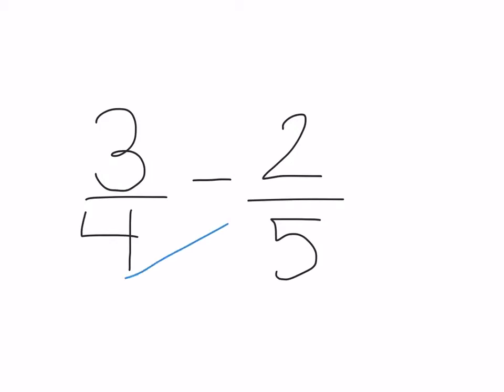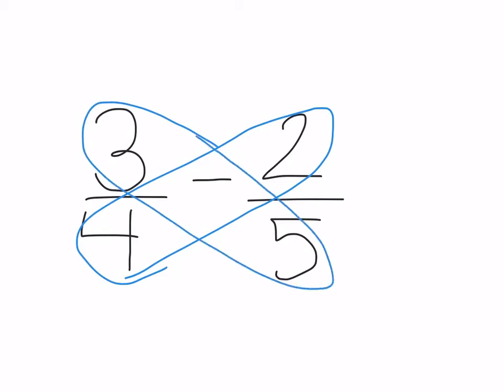You would do a similar method if you wanted to subtract numbers. So if you wanted to subtract 2 fifths from 3 fourths, you would first create the butterfly body by multiplying the two sides. And then you would create the antennas, and write the two numbers inside, so 3 times 5 again is 15, and 4 times 2 is 8.